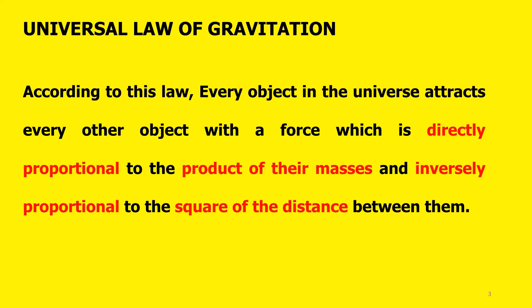Now, what is the universal law of gravitation? According to this law, every object in the universe attracts every other object with a force which is directly proportional to the product of their masses and inversely proportional to the square of the distance between them.